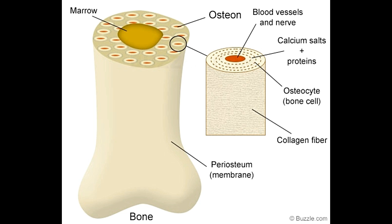It is a constant process and is carried out for an individual's entire lifetime. A disorder related to either one of the three is disastrous for bone health, since all three, even the osteoclasts, are vital. These three are part of an osteon, which is a functional unit of compact bone matter.